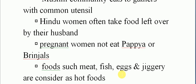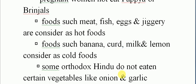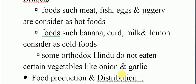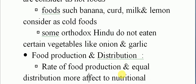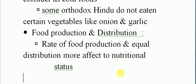In Hindu tradition, women may eat last after all family members have eaten, which affects their nutritional intake. Foods such as meat, fish, egg, and jaggery are considered as hot food. Some orthodox Hindus do not eat certain vegetables like onion and garlic. Food production, distribution, and equal distribution all affect nutritional status.